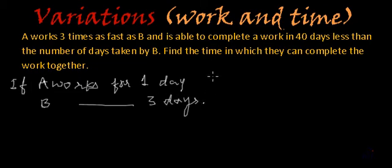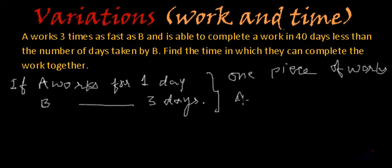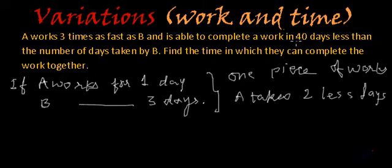So the piece of work which A can finish in one day, B will finish in three days. So in one piece of work, A takes two less days. And if A is taking 40 less days, if A is taking two less days than B, A is working for one day.